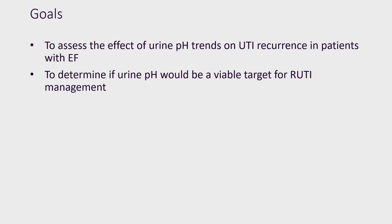If such an association was found, lowering urine pH may be a way to manage recurrent UTIs, especially in patients who have had recurrences after electrofulguration.